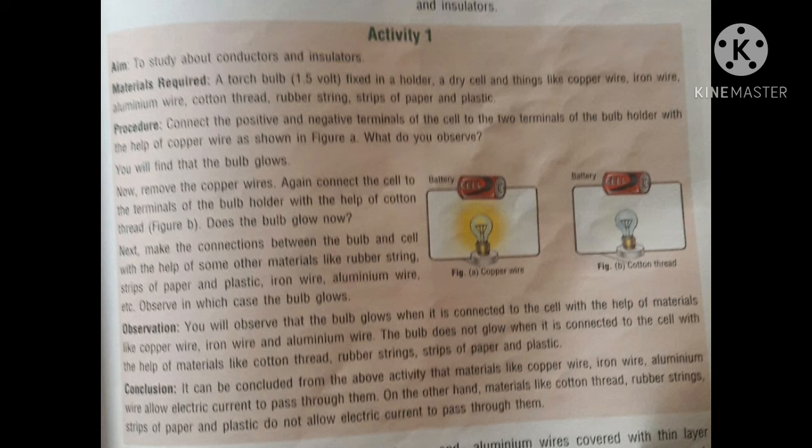Procedure: First, connect the positive and negative terminals of the cell to the two terminals of the bulb holder with the help of copper wire as shown in Figure A. What do you observe? The bulb glows. Now remove the copper wires and again connect the cell to the terminals of the bulb holder with the help of cotton thread. Does the bulb glow? No.